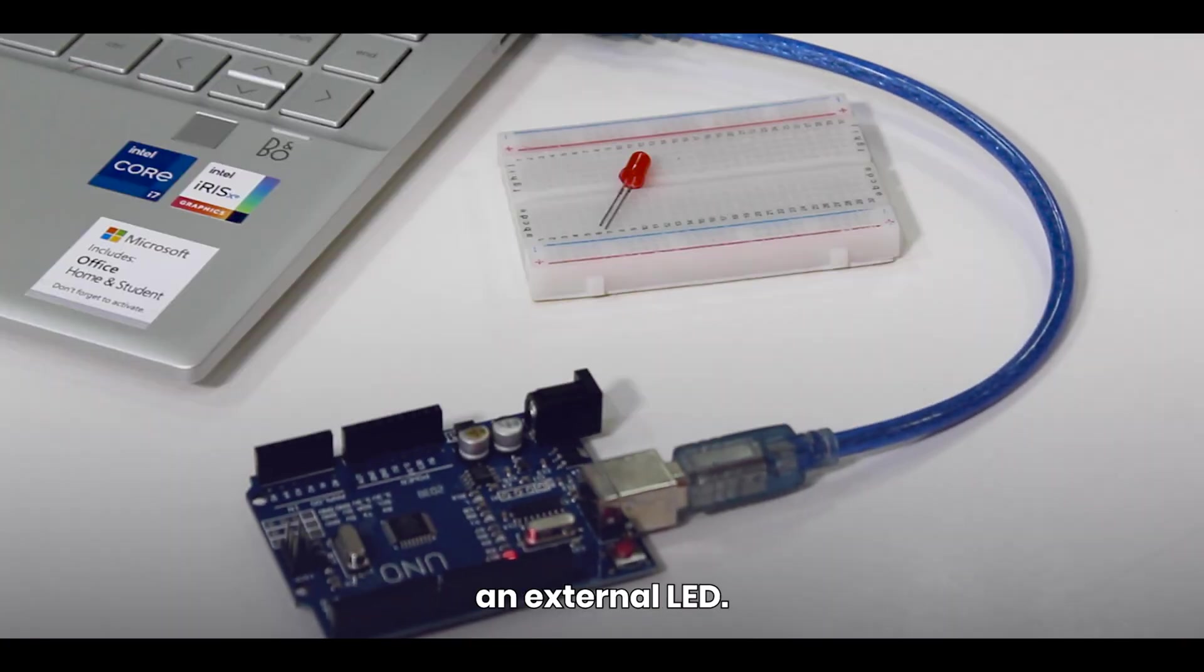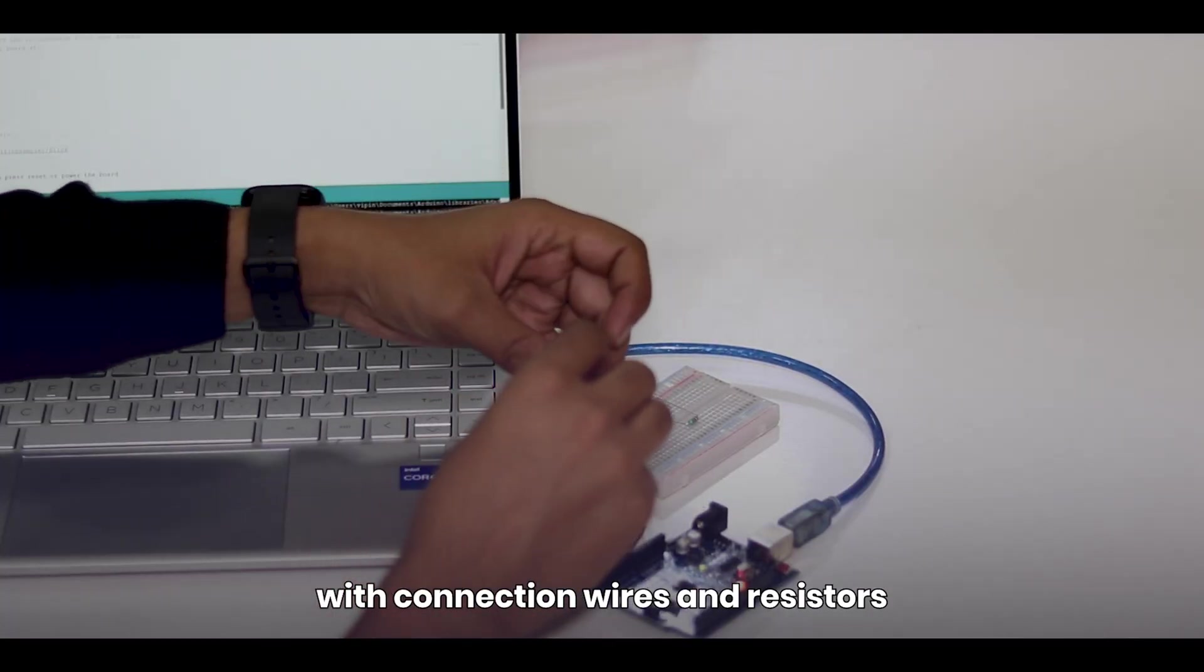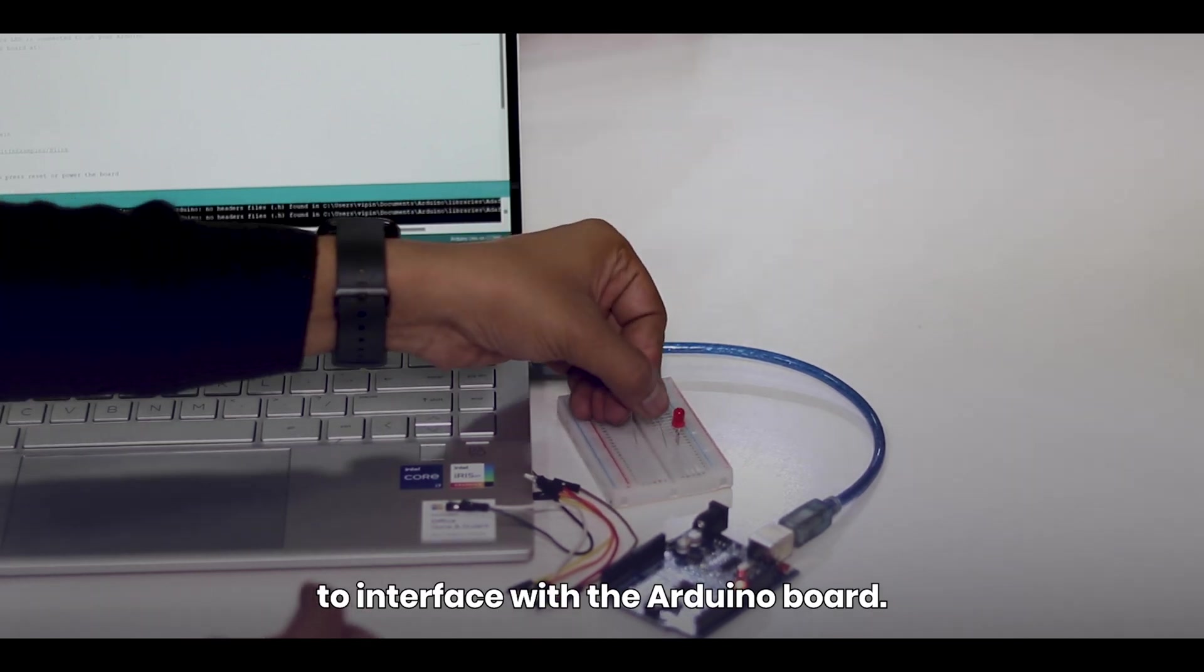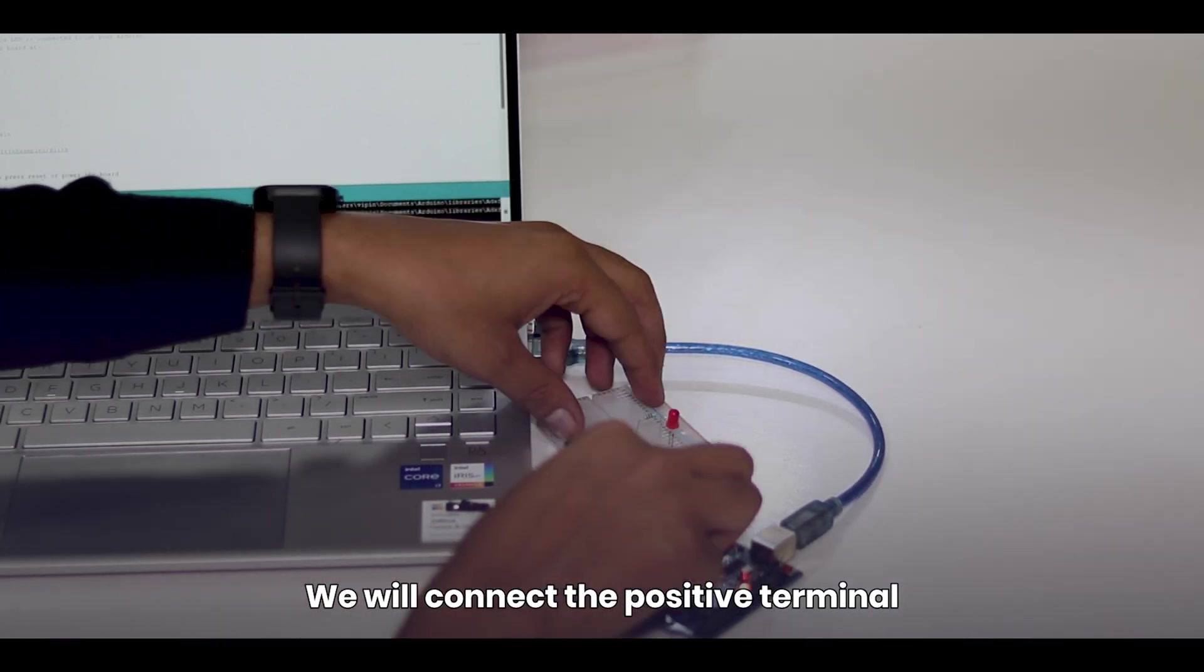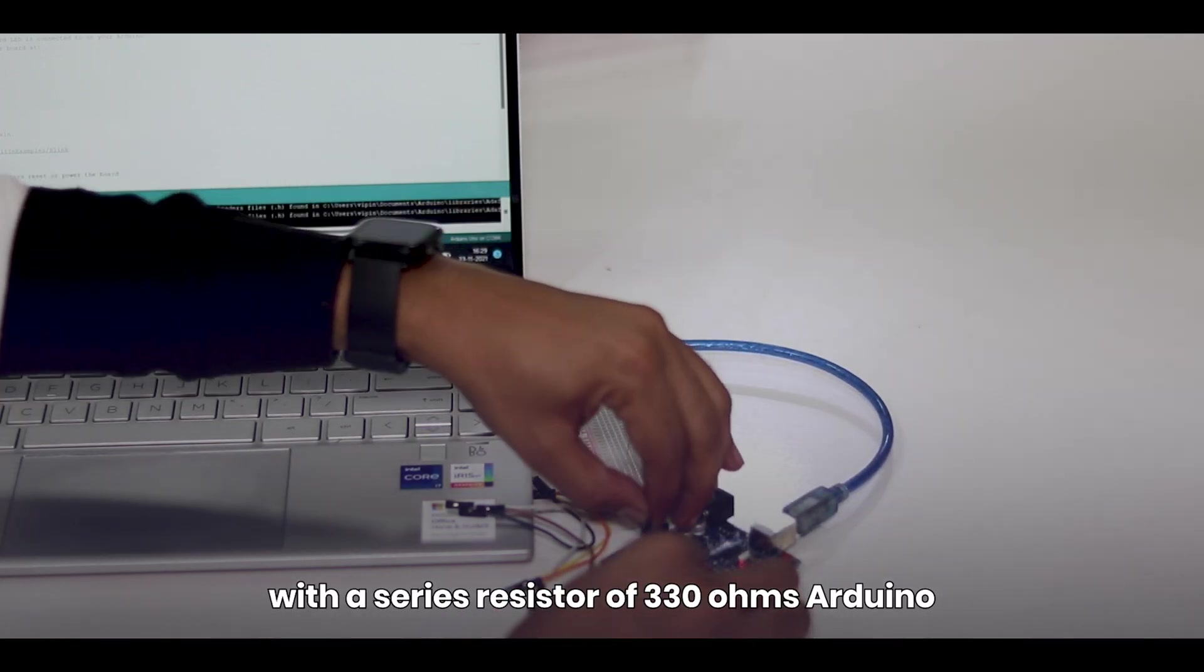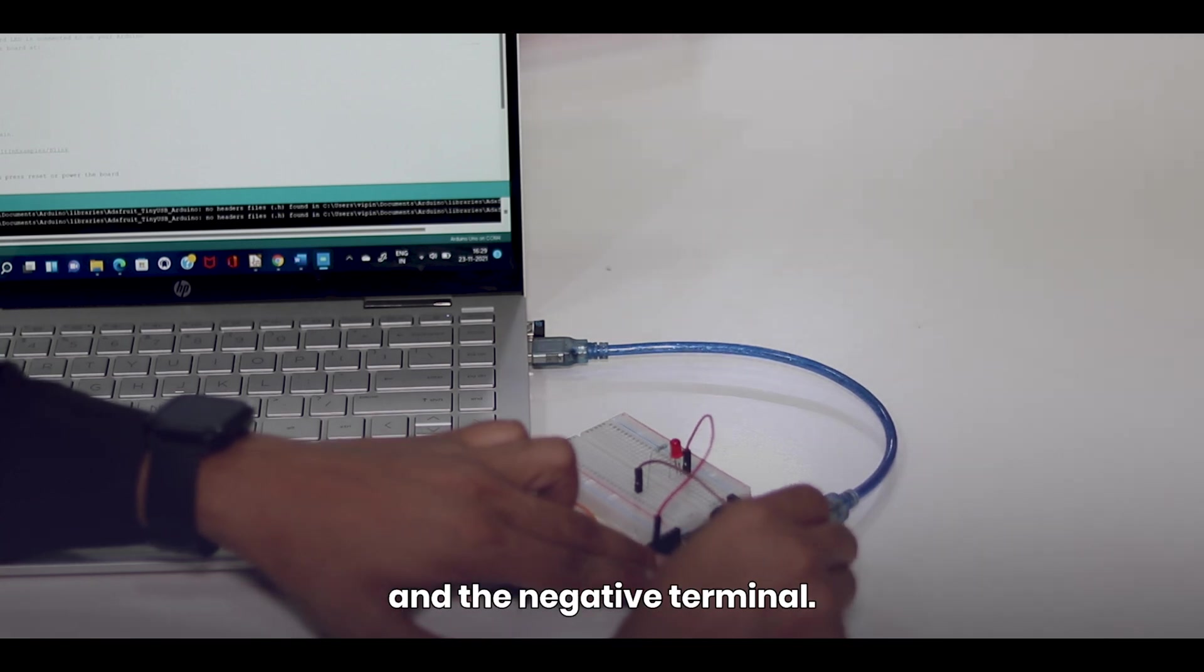Now suppose you want to blink an external LED with the help of an Arduino, then we will use a breadboard with connection wires and resistors. To interface with the Arduino board, we will connect the positive terminal to the D13 pin with a series resistor of 330 ohms to ground the Arduino Uno and the negative terminal.